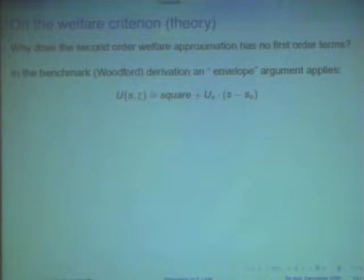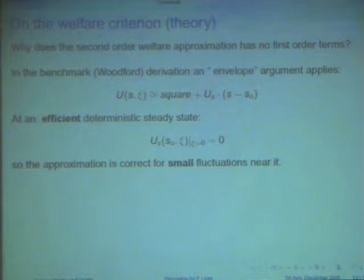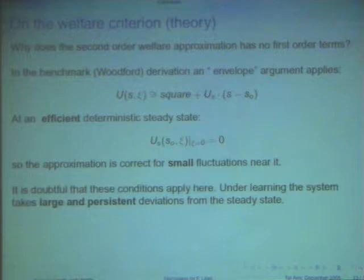Well, then you look in Woodford's book, and you know that U is the true utility, and you take a second-order approximation, there's some quadratic term, and there is a first-order term, of course. But the point is that then you read the book, and it says, but now let's assume that you are looking at this system at an efficient steady state and deterministic. So, the xi, which is like all the random stuff, is switched off, and the steady state that you're looking at is efficient. So, this first-order term, because you're looking at an optimum, is zero. And then the approximation under this assumption is correct for small fluctuations about this steady state.